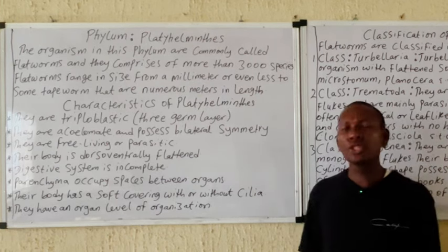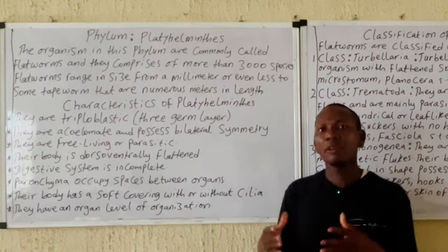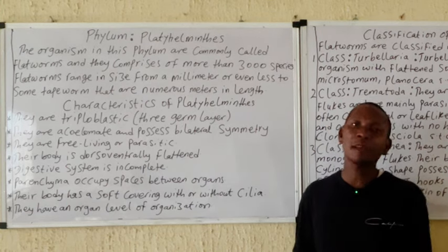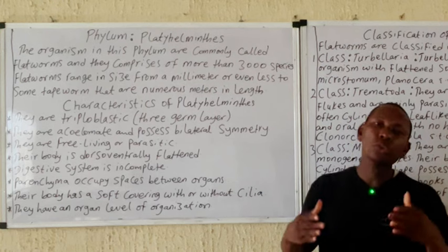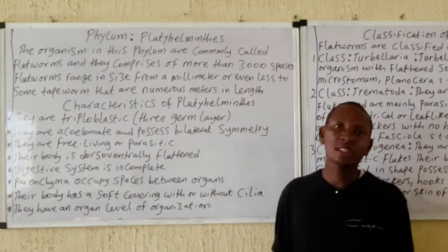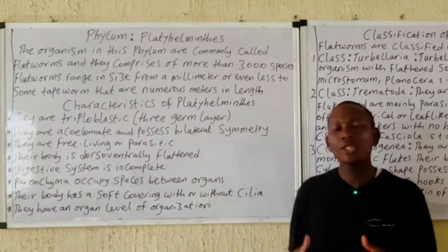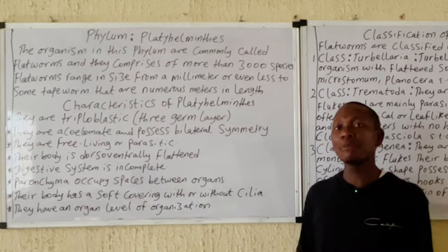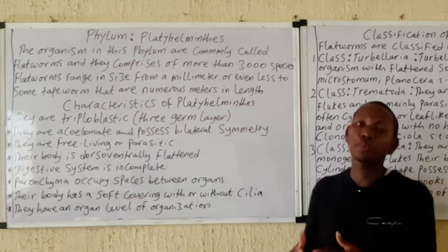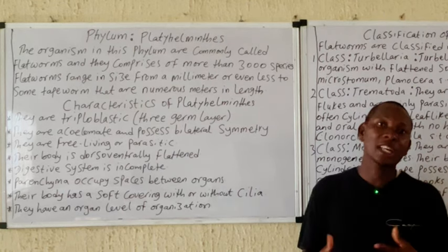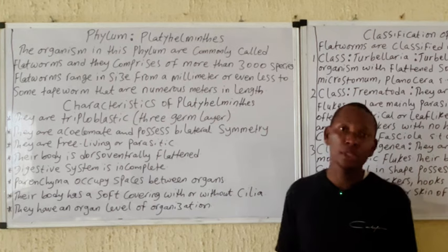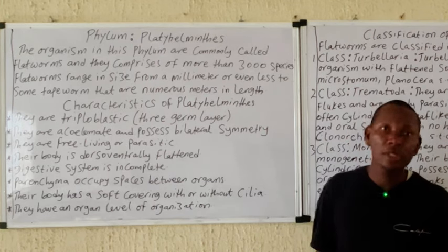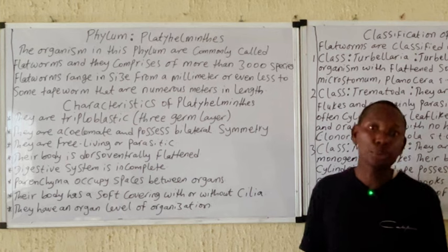The organisms in this group — the Platyhelminthes — generally lack a skeletal system, they lack a respiratory system, and they also lack a circulatory system. Excretion in these organisms is usually carried out by the flame cell.